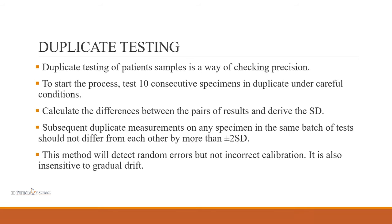Internal quality control also includes duplicate testing, which is a way of checking precision of the system. Ten consecutive specimens are run in duplicate under careful conditions. We calculate the differences between the pair of results, derive the standard deviation, and subsequent duplicate measurements on any specimen of the same batch should not differ by more than plus or minus 2 SD. This method is useful to detect random errors but will not detect systematic error or incorrect calibration, and is insensitive to gradual drift.